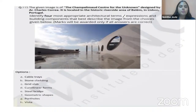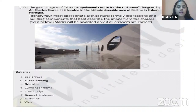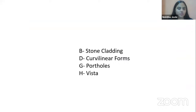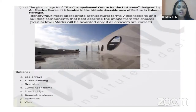The next building is the Champalimaud Centre for the Unknown, designed by Charles Correa, located in the historic riverside area of Belém in Lisbon, Portugal. Being riverside, it creates a vista — an open space from which people can enjoy the view of the river. Option H, vista, is correct. Other correct options relate to stone cladding, the building's curvilinear form, and porthole windows — circular or elliptical windows — visible on the facade.